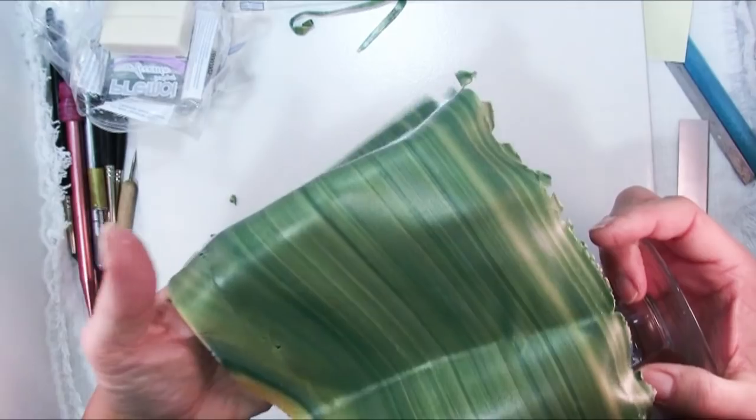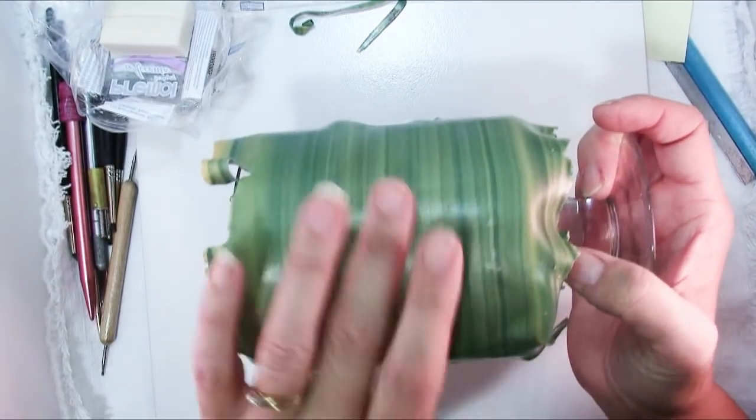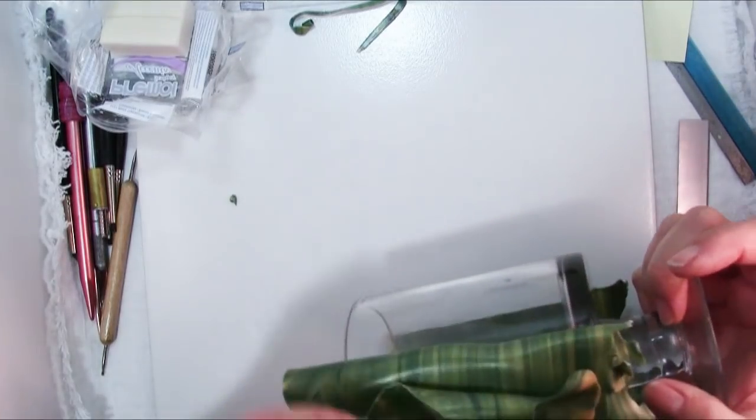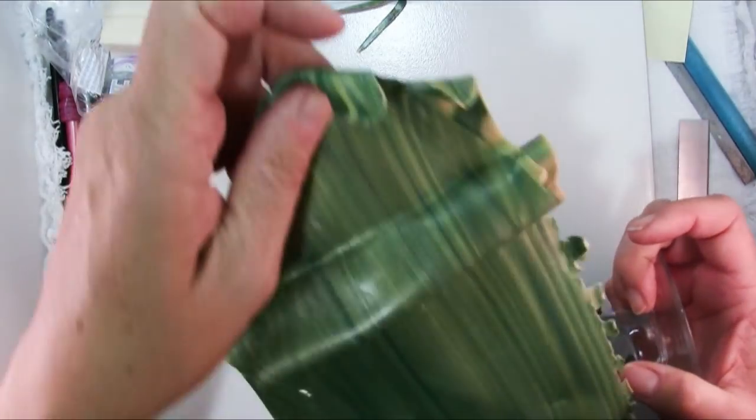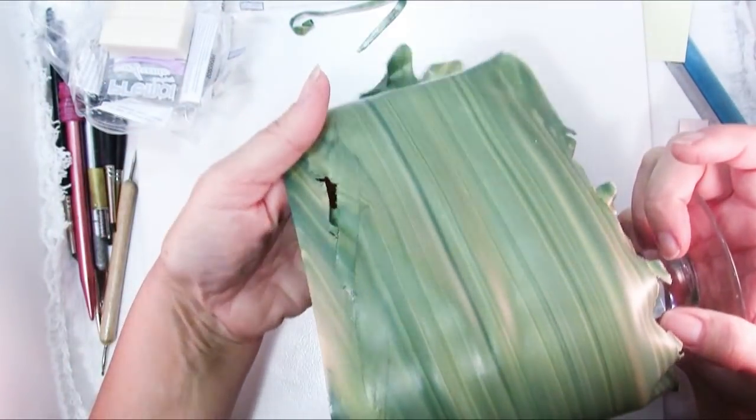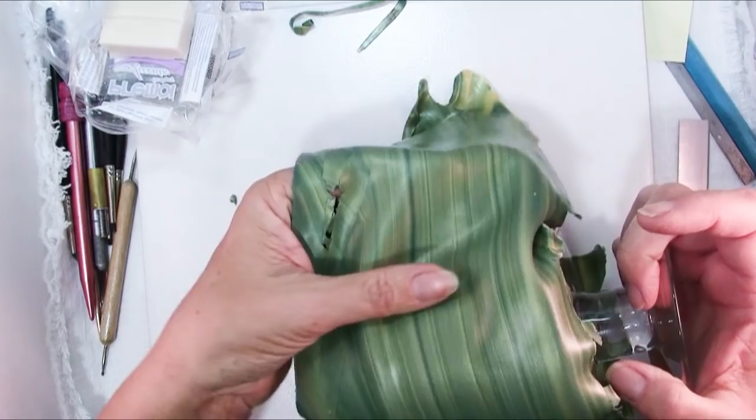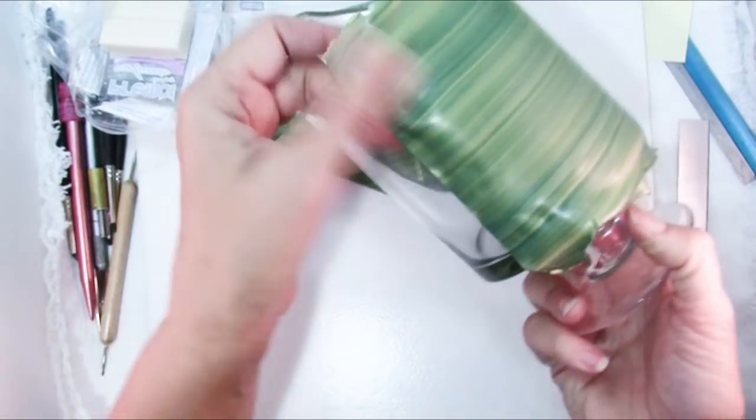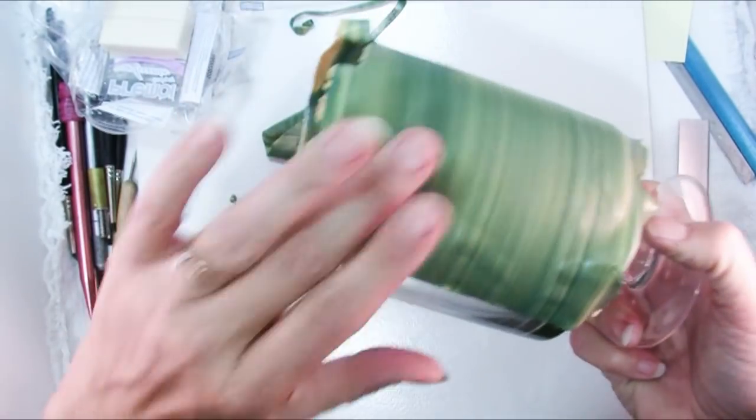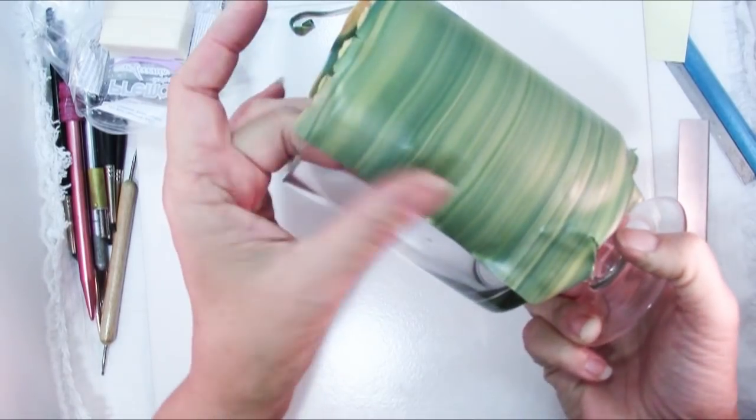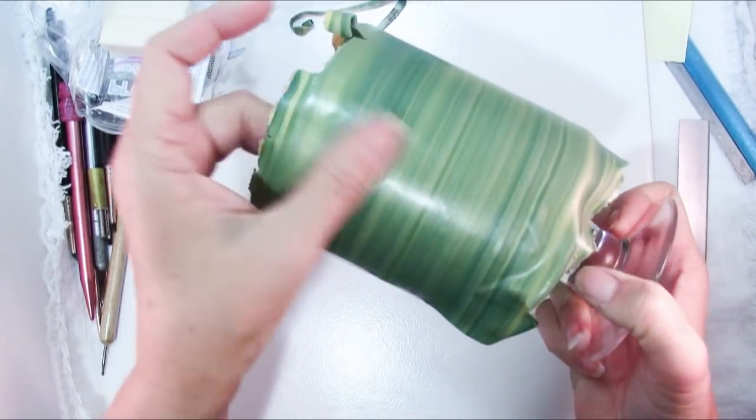You just work your way around. And I will say Primo, the Primo translucent is actually a lot more cooperative than the Pardo. The Pardo is clearer, so there's that benefit, but the Primo is definitely easier to work with. So you just work your way around, smoothing out the air bubbles as best you can until the whole thing is covered.